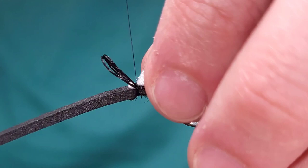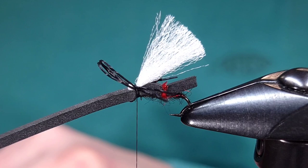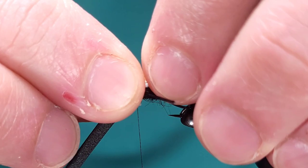So lastly I'm going to add some para post in fluorescent orange. This is optional. You could use a small piece of foam if you'd like, yarn, whatever you like. Just an added hot spot here especially as you get in the smaller sizes. This is a nice little added feature.